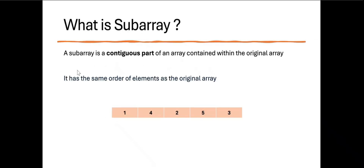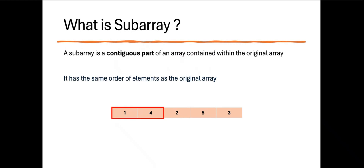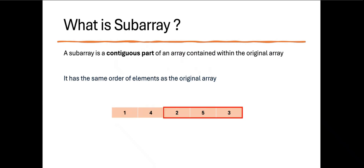Before that, what is a subarray? A subarray is a contiguous part of an array and its content is within the original array. It has the same order of elements as the original array. Given this input array, we will check some subarray examples. One element also represents a subarray — it is a contiguous part of the array.